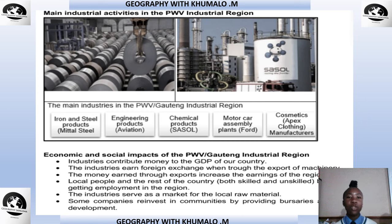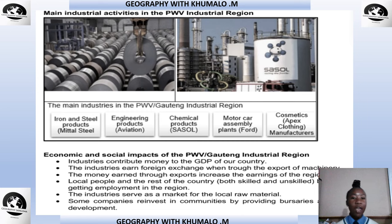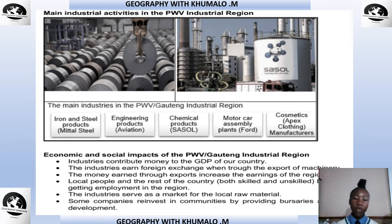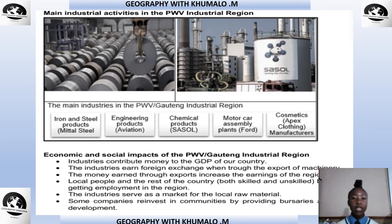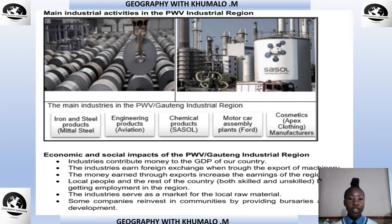The main industrial activities in the PWV industrial region are: iron and steel products, metal and steel engineering products, aviation, chemical products such as Sasol, motor car assembly plants, cosmetics, and clothing manufacturers such as Apex clothing.